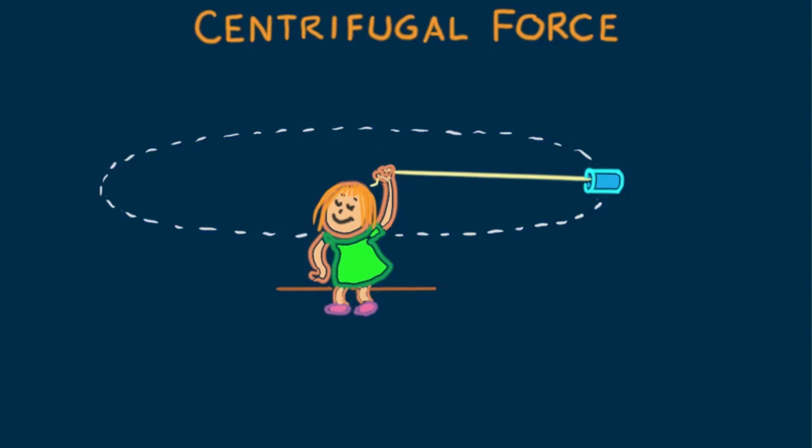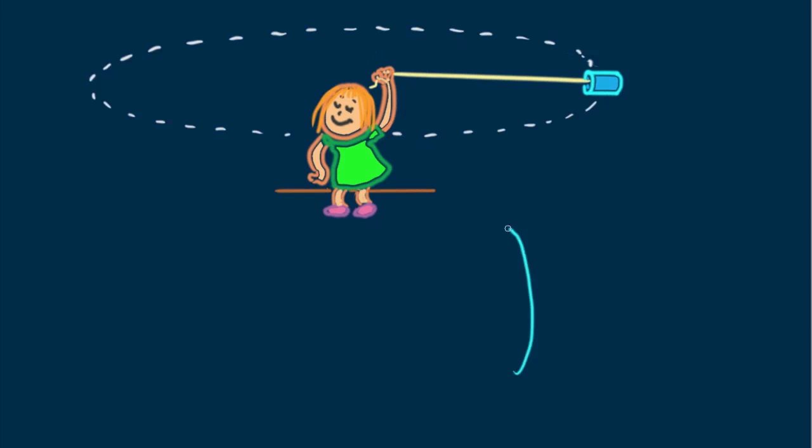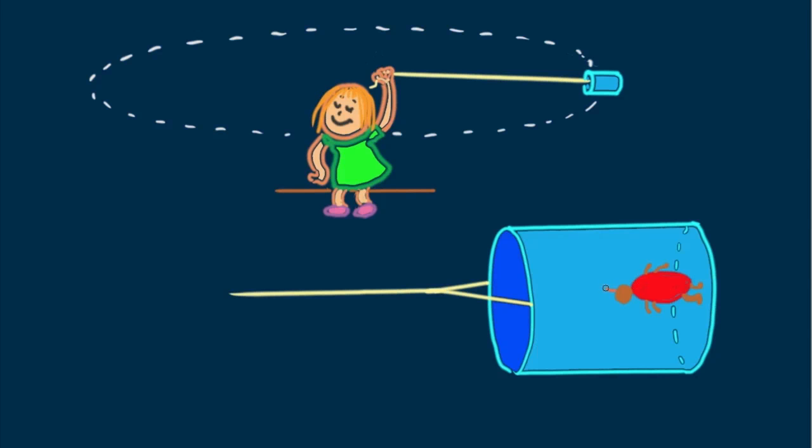Clearly there's no outward pull on the can. Let's look inside the can and assume motion is perfectly horizontal. A pet bug inside the can is also whirled in a circular path. There's clearly a centripetal force on her.